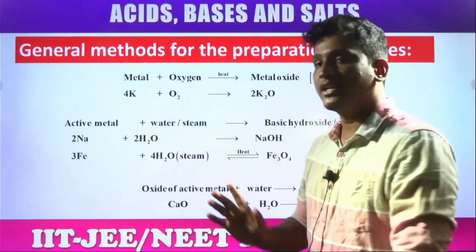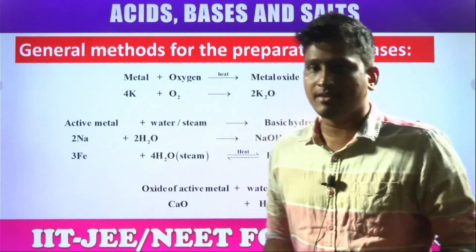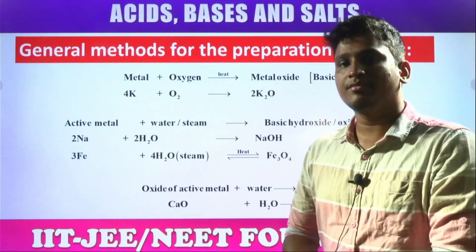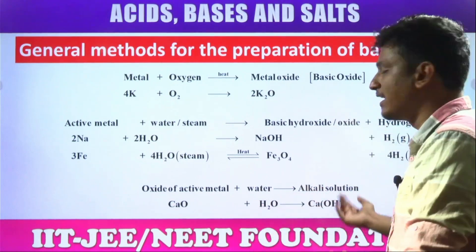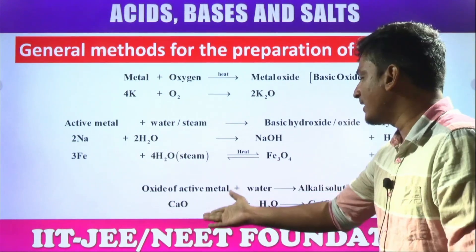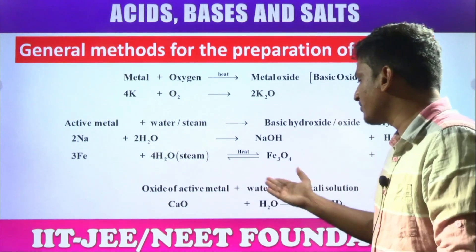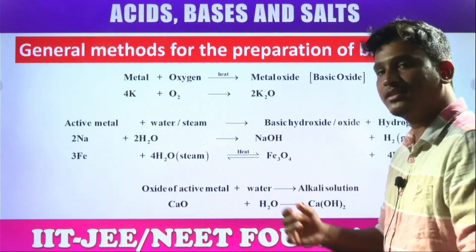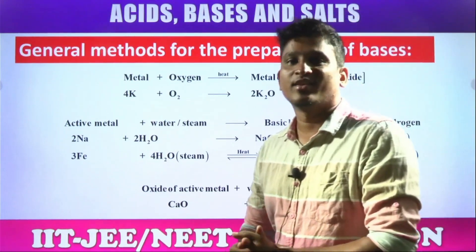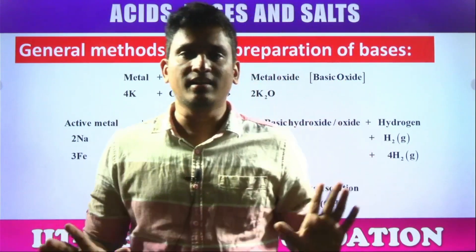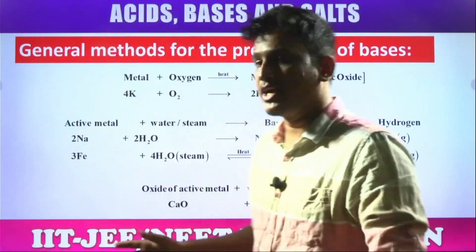One more technique: metallic oxides plus water. When metallic oxides dissolve in water and react with water, they form the respective hydroxides, which are direct Arrhenius bases. For example, calcium oxide plus H₂O gives calcium hydroxide, and magnesium oxide plus H₂O gives magnesium hydroxide. Ultimately we get Arrhenius bases which can release OH⁻ ions.